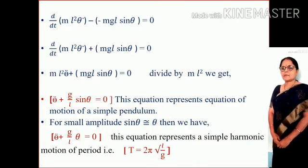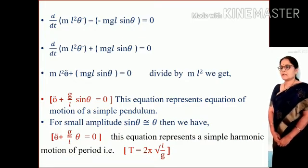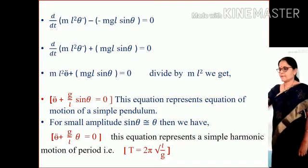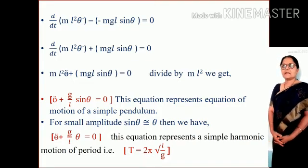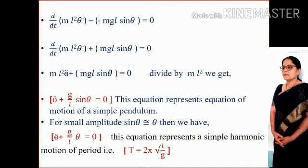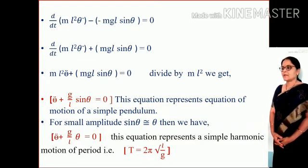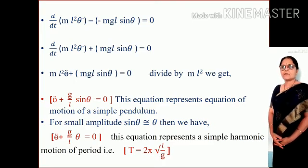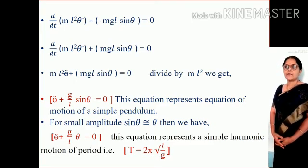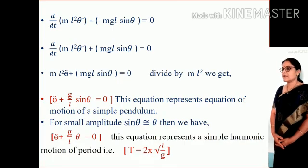For small amplitude, sin theta is approximately equal to theta. Then, theta double dot plus g upon L theta equals zero. This equation represents a simple harmonic motion of period T equals 2 pi times the square root of L upon g.